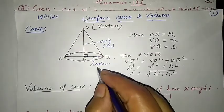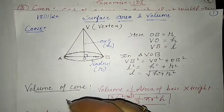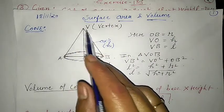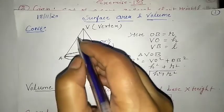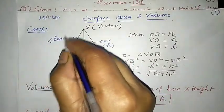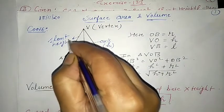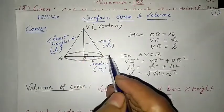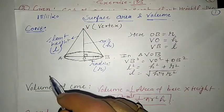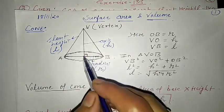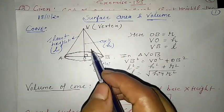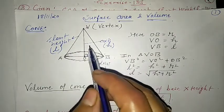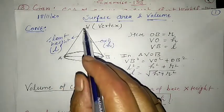VA and VB are known as the slant height, denoted by l. Now let VOB be a right-angle triangle in which angle VOB equals 90 degrees. This triangle is rotated about the VO axis.